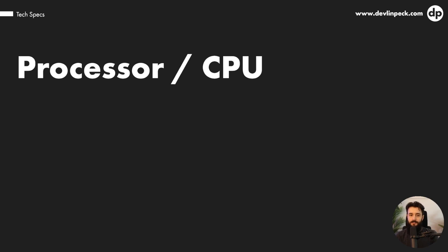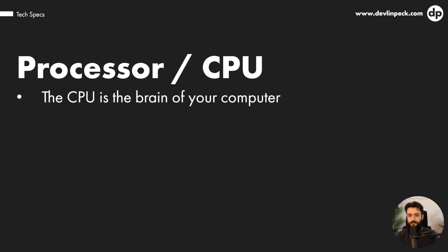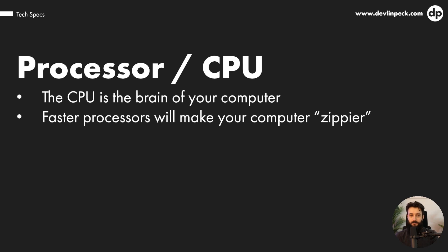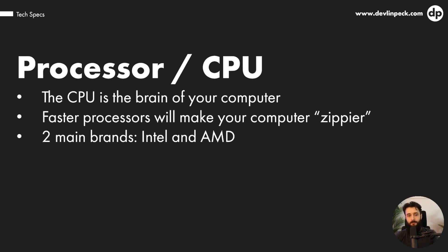First things first is the processor, or CPU. This is basically the brain of your entire computer — it runs all the calculations and tells everything else what to do. If your processor is slow, it's going to slow down everything else. Faster processors will make your computer zippier, but if other components are too slow it could still be slow overall. So just because your computer is running slowly doesn't necessarily mean it's the processor, but if your processor isn't fast, nothing else is going to be fast either. We don't want this to be a limiting factor.